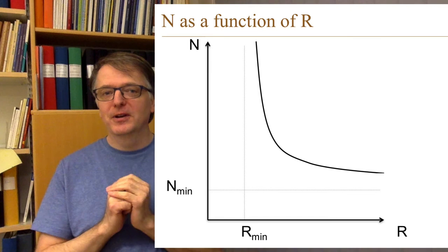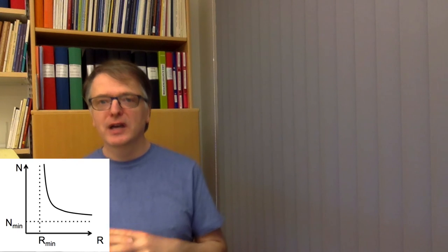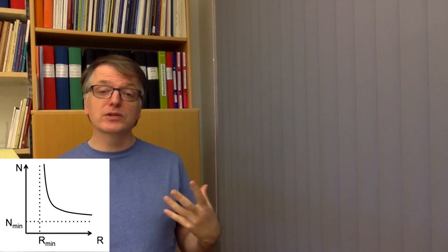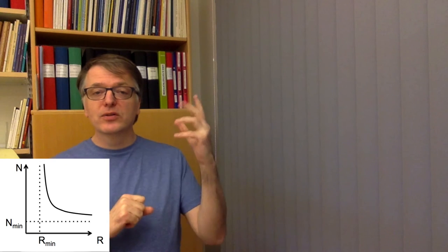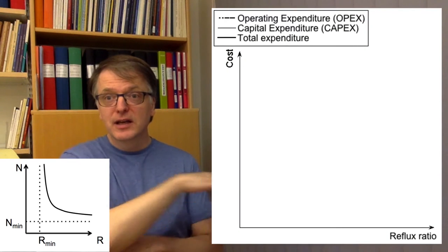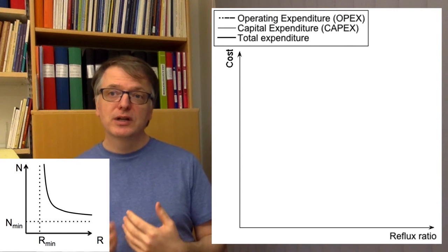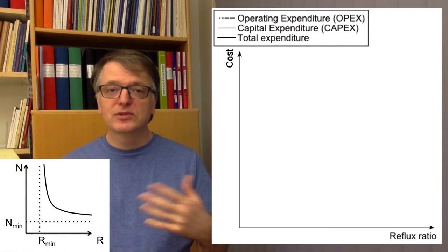Let's take this a step further — what does this mean if you want to build this equipment? You have a capital expenditure and an operating expenditure. The bigger the thing you need to build, the more it costs to invest, and the more energy you need in the reboiler and condenser, the higher the operating expenditure. Try to draw a diagram with cost on the y-axis and the reflux ratio on the x-axis, showing both capital expenditure and operating expenditure, then sum them to a total expenditure.